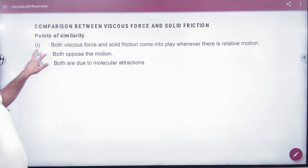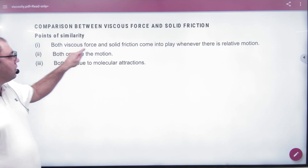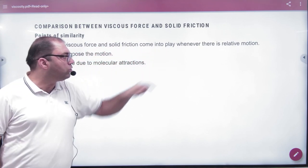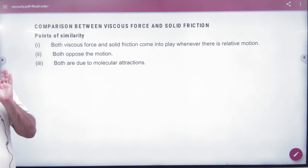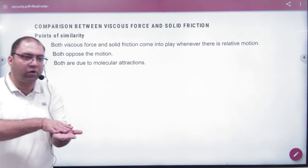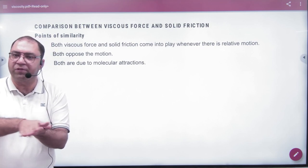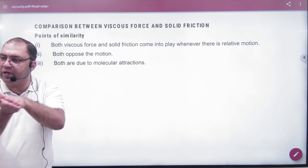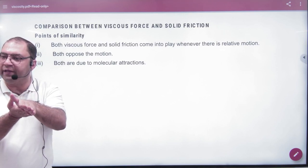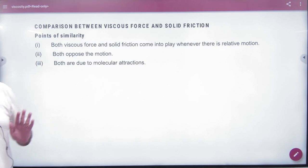The first similarity is that both viscous force and solid friction come into play when there is some relative motion. Solid friction is when the earth is moving and a block is moving - it is relative motion. And liquid friction is when one of the layers is slow and one is fast. If it is relative motion, the friction will exist.